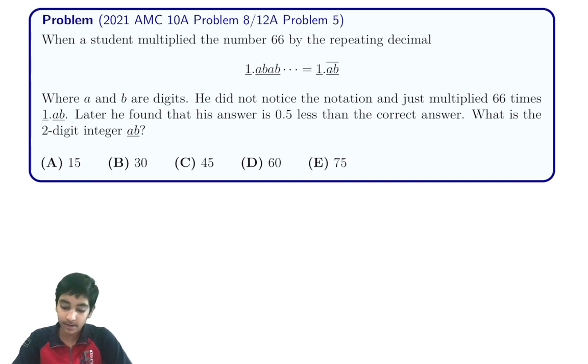When a student multiplied the number 66 by the repeating decimal 1.ABAB, or also known as 1.AB bar, which basically means AB repeating on and over again, like they say here, where A and B are digits.